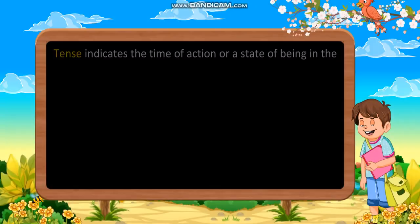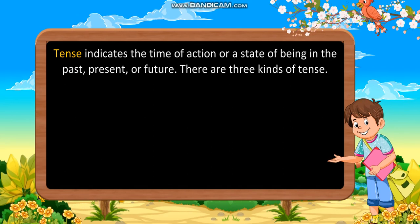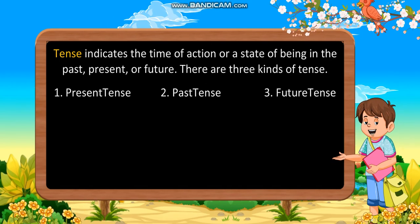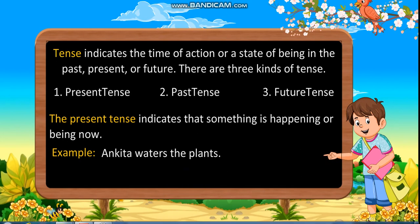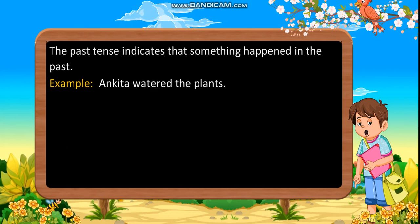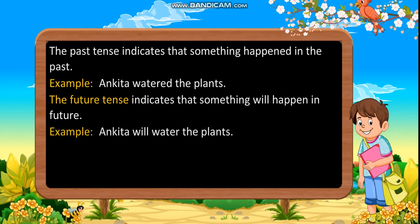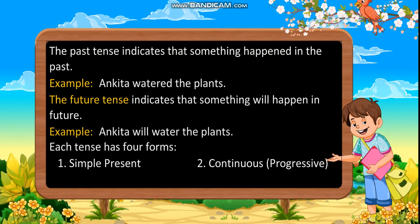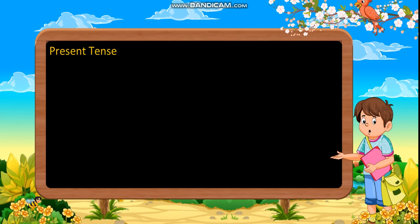Tense indicates the time of action or a state of being in the past, present, or future. There are three kinds of tense: first, present tense; second, past tense; third, future tense. The present tense indicates that something is happening now. Example: Ankita waters the plants. The past tense indicates something happened in the past. Example: Ankita watered the plants. The future tense indicates something will happen in future. Example: Ankita will water the plants. Each tense has four forms: simple, continuous/progressive, perfect, and perfect continuous.